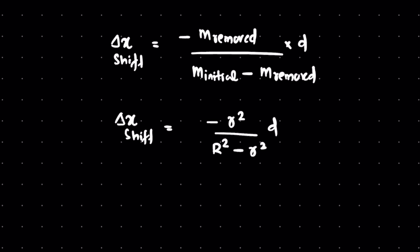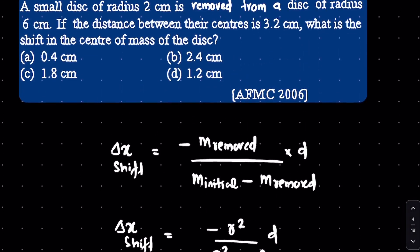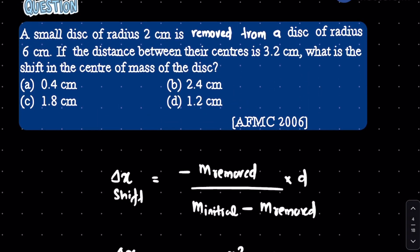And then in order to make the maximum shift, we can actually make d equal to R minus r. But here, everything is directly given, so we don't need to worry much about that.